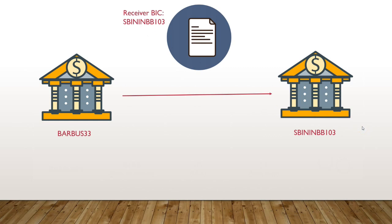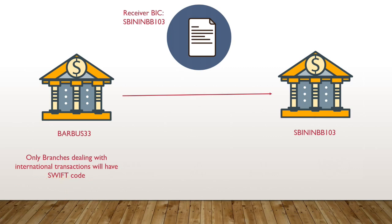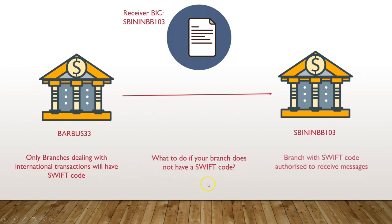I will talk about various SWIFT message types used in international trade in my next tutorial. Please remember, not all branches of a bank have a SWIFT code — only branches dealing with foreign exchange transactions will have one. So if you have an account at a branch without a SWIFT code and you want to receive international funds or a letter of credit, simply ask your branch which branch receives SWIFT messages on its behalf. Usually it is the nearest branch with a SWIFT code.